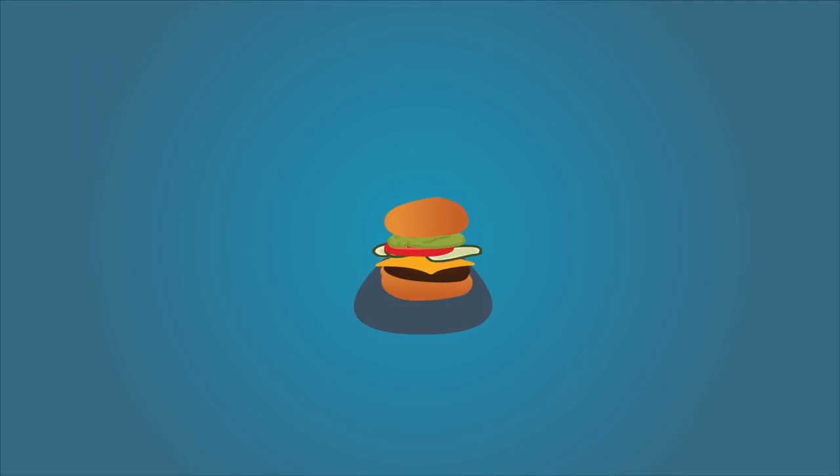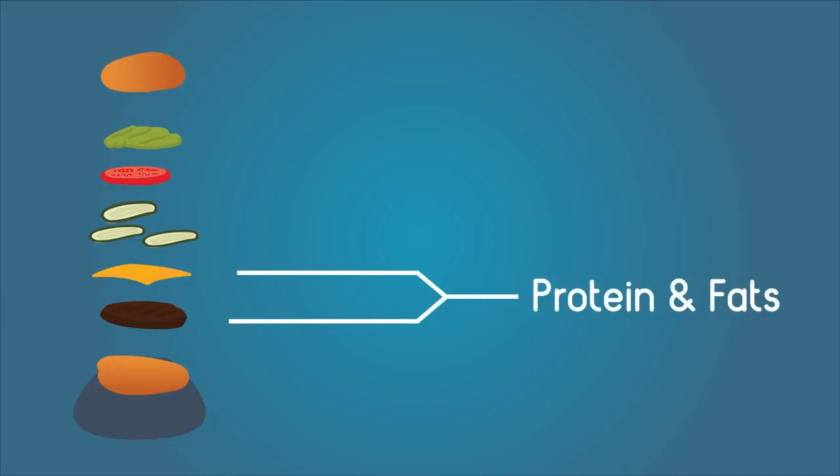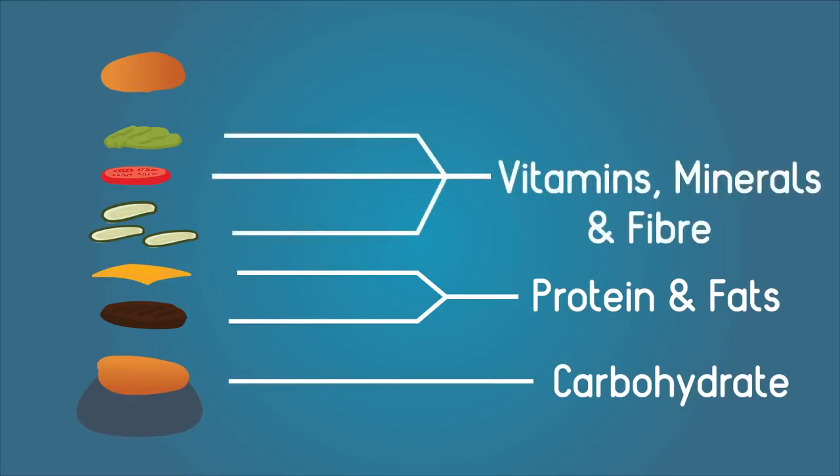Look at this juicy burger. Doesn't it look appetizing? It has so many good things in it that my body needs: protein and fats in the meat and cheese, carbohydrates in the bun, vitamins, minerals and fiber in the salad. But how can I use them? I need to get them into my blood, and this burger is never going to fit.